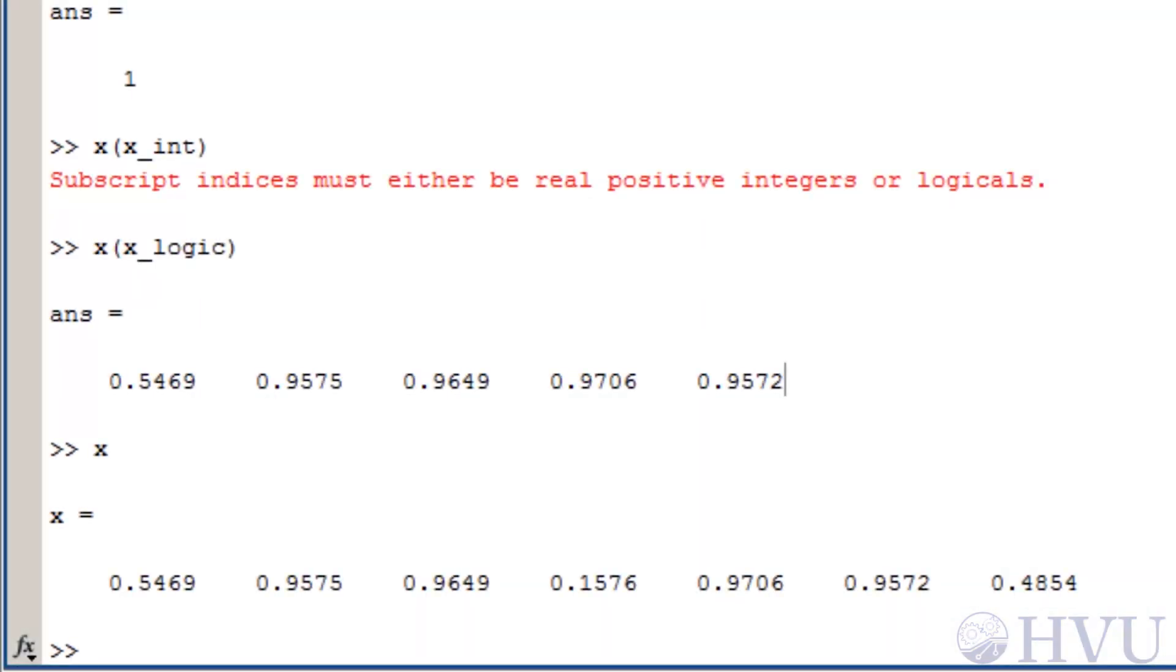Now I'll do something similar to the last demonstration, but I'll use RELATIONAL operators. Recall that the last time I created an array of random numbers between 0 and 1, and then used a rounding process and LOGICAL values to determine which elements of the original array are greater than 0.5.